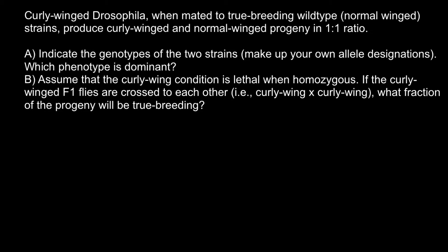Hello and welcome to Nikolai's genetics lessons. Today's problem: curly-winged Drosophila, when crossed to true-breeding wild-type normal-winged strains, produce curly-winged and normal-winged progeny in a ratio of one to one. Question A asks us to indicate the genotypes of the two strains using our own allele designations, and to determine which phenotype is dominant.